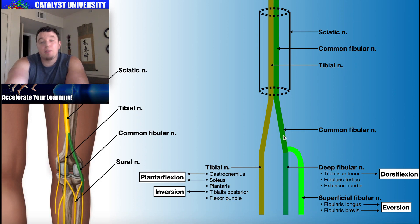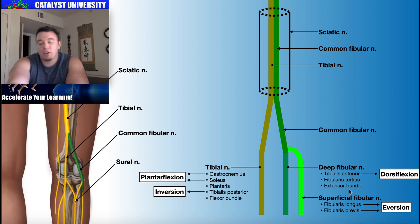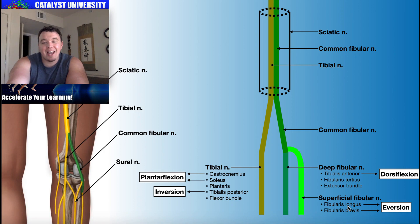The common fibular nerve, also called the common peroneal nerve, diverges into two branches. We have a deep branch — the deep fibular nerve — which innervates the tibialis anterior, the fibularis tertius, and a few extensor muscles that control extension of the toes and foot. Then we have the lighter green superficial branch, the superficial fibular nerve, which mainly controls fibularis longus and fibularis brevis.